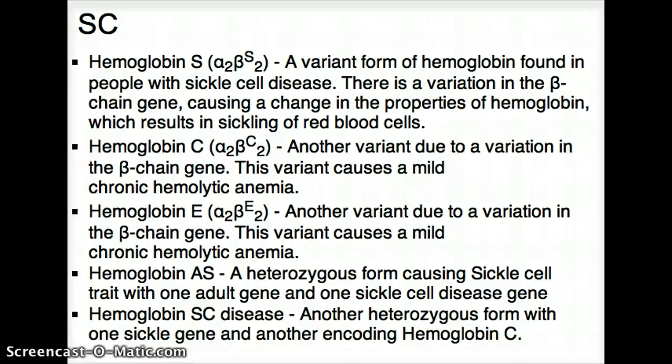Hemoglobin E is also a type of hemoglobin due to variation in the beta chain, and this variant causes mild chronic hemolytic anemia. Sickle cell deals with a mutation replacing glutamic acid with valine. For HbC disease, it's a replacement of glutamic acid with lysine. So in both cases it starts as glutamic acid, but in sickle cell it becomes valine, and in HbC disease it becomes lysine.